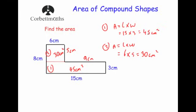Adding the two areas together, the total area of the whole L-shape is 45 plus 30, which equals 75 centimeters squared.